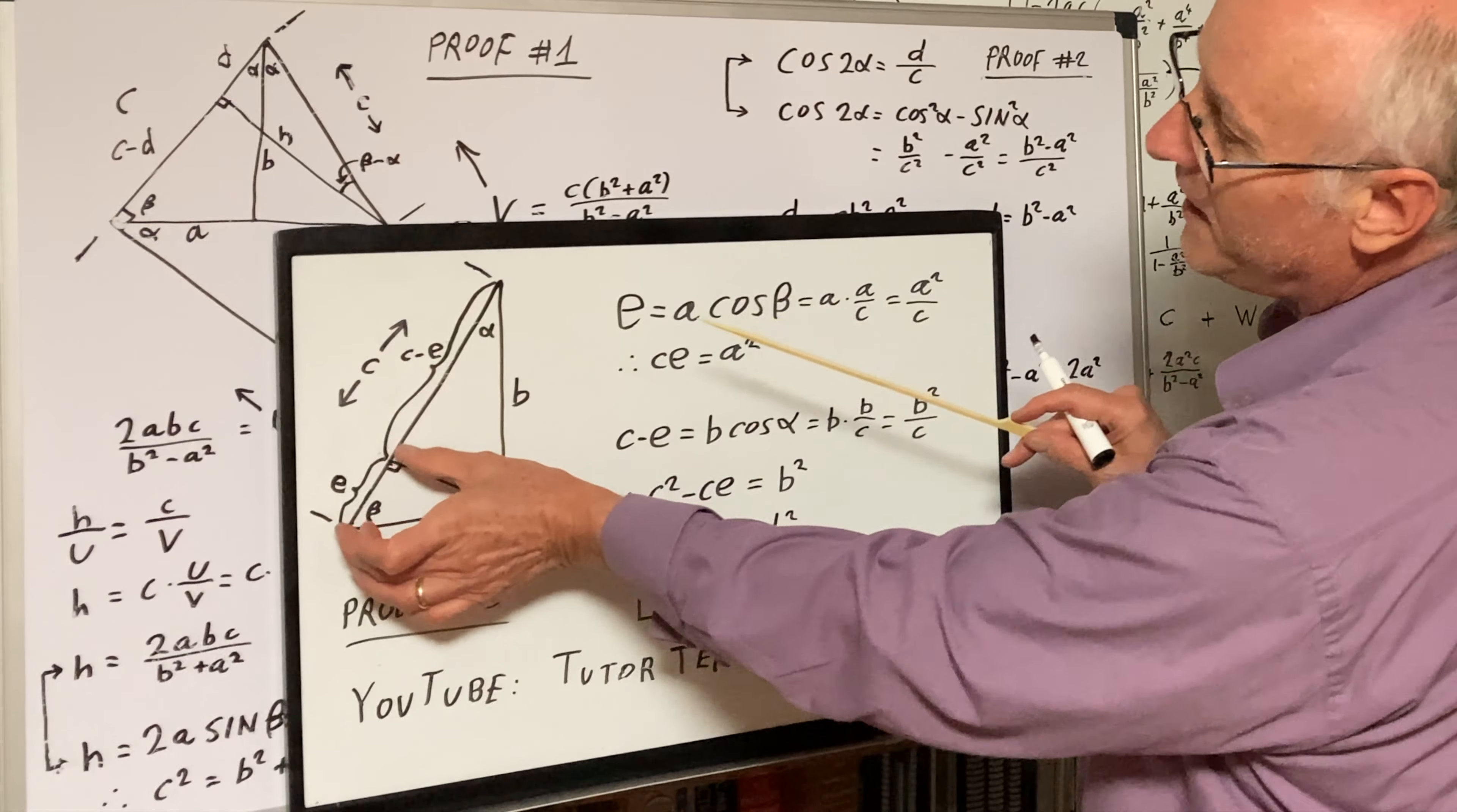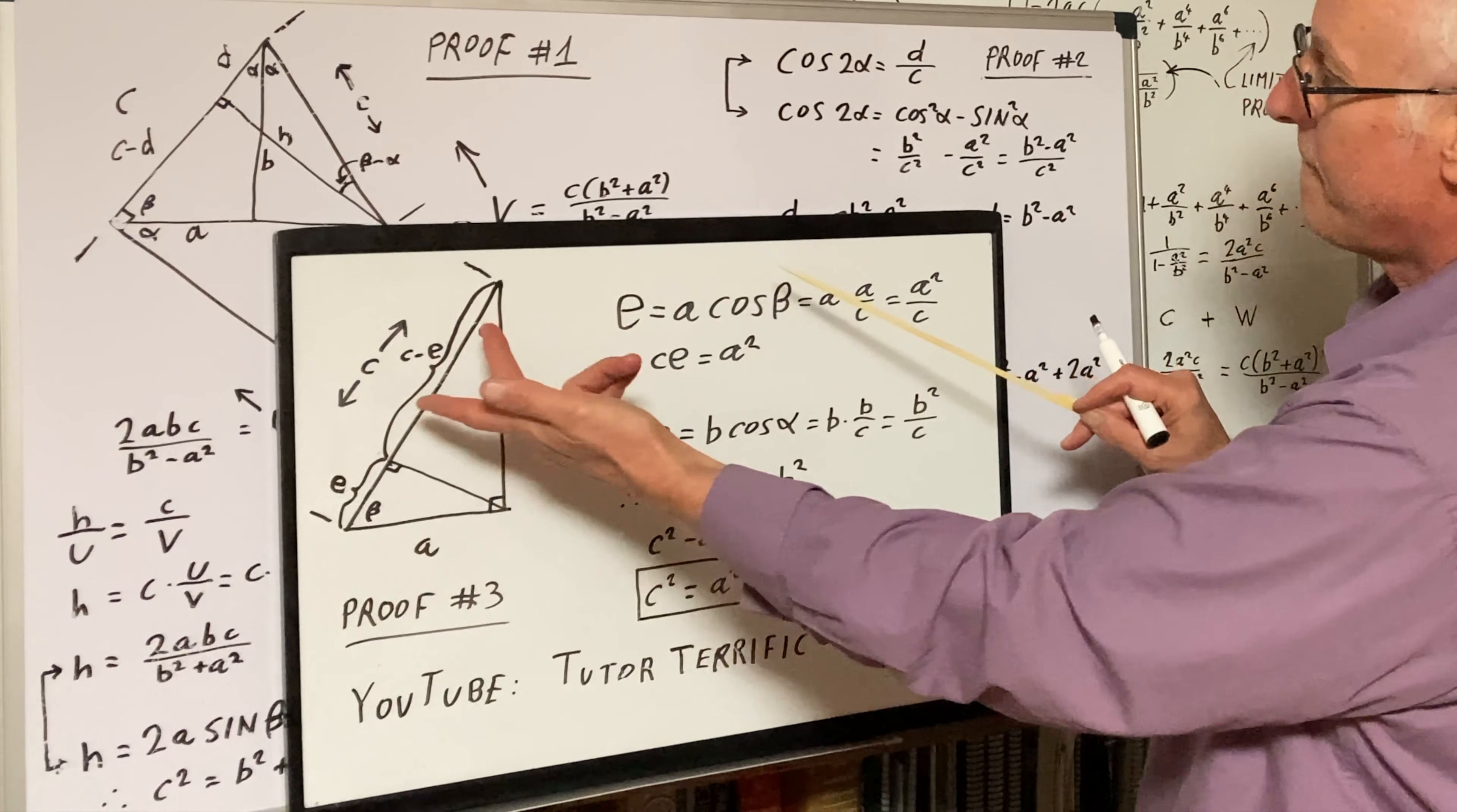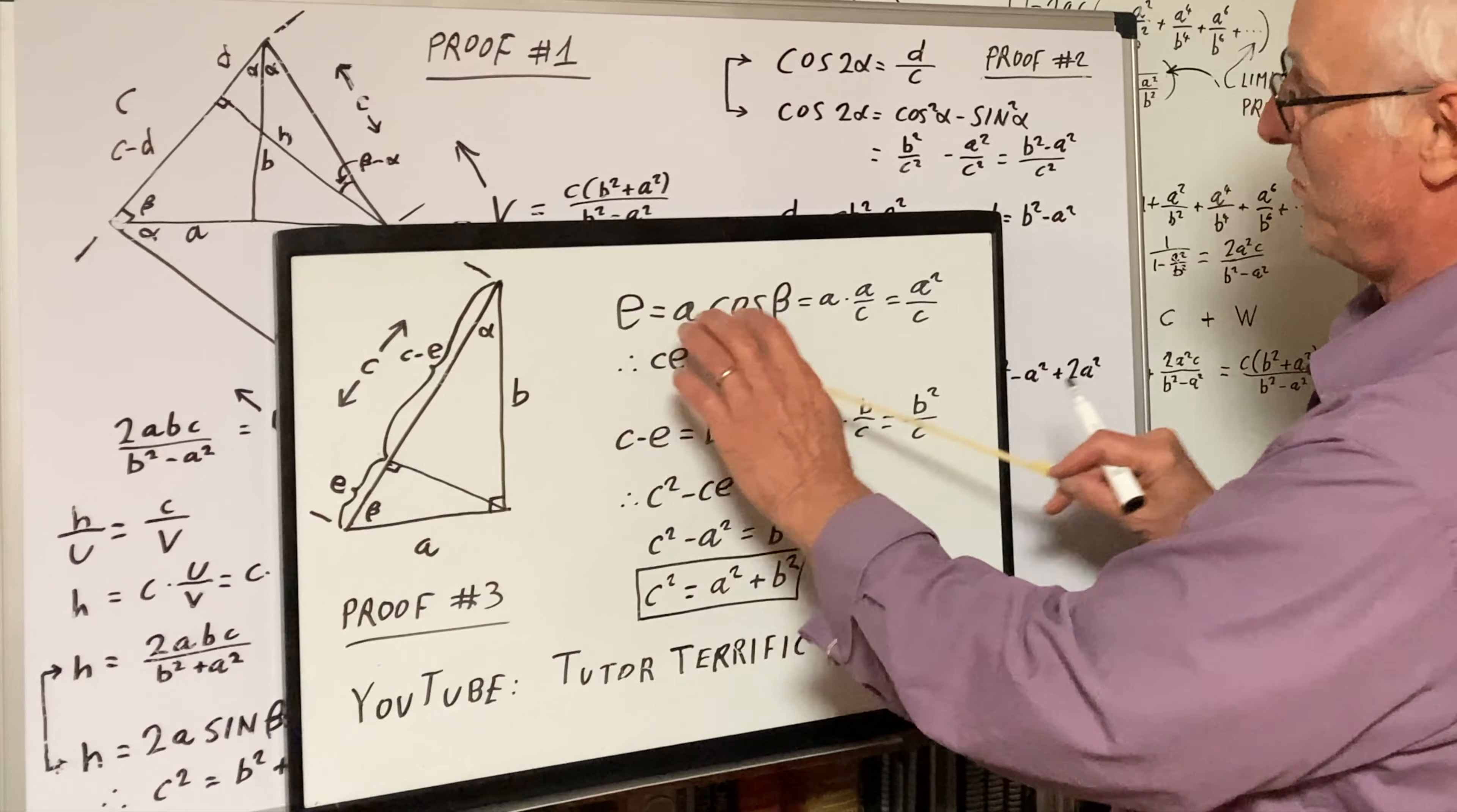We have E segment. And then this is C. This must be C minus E because total, if you add this up, that adds up to C. So E equals A cosine B because cosine B is E over A or adjacent over hypotenuse.